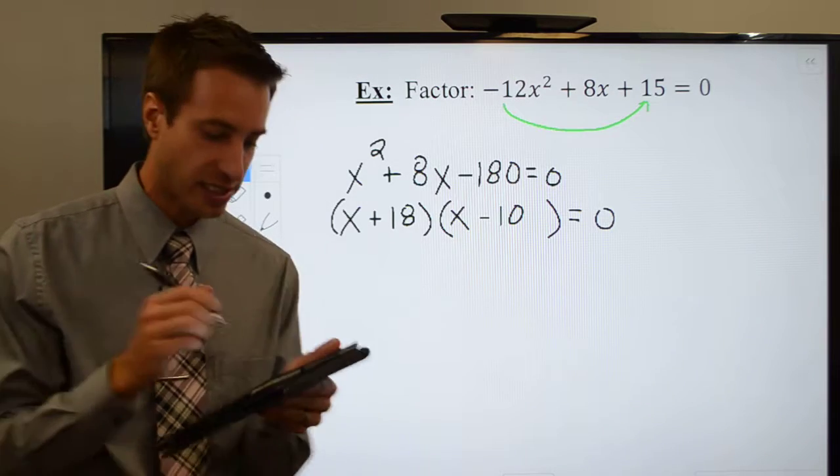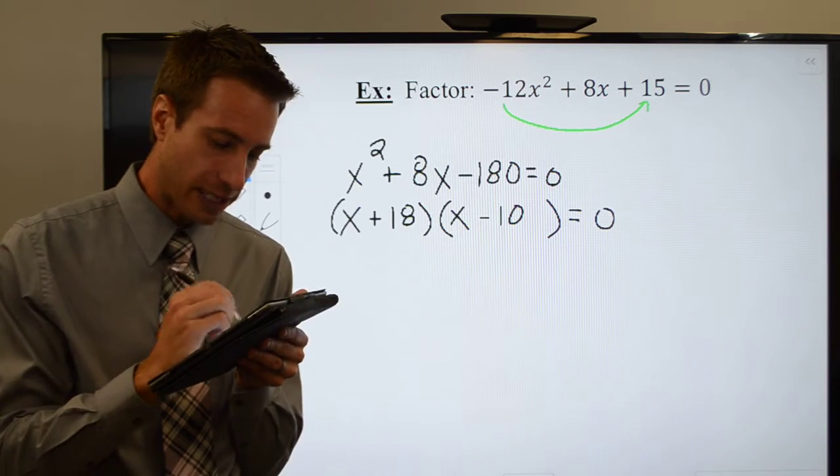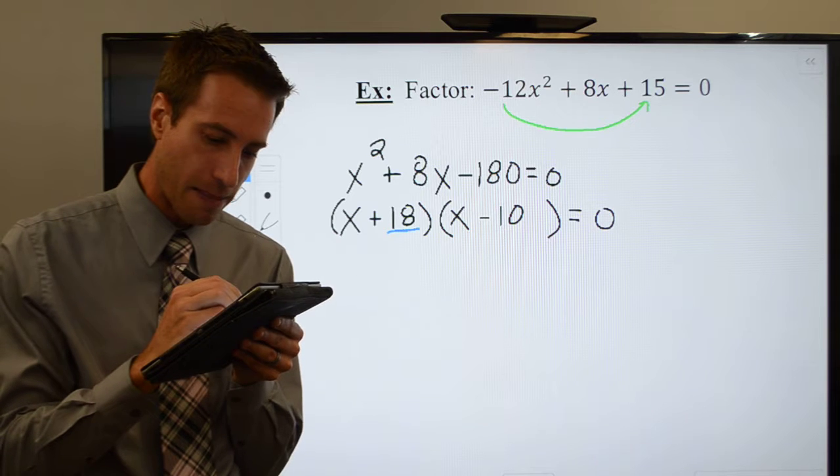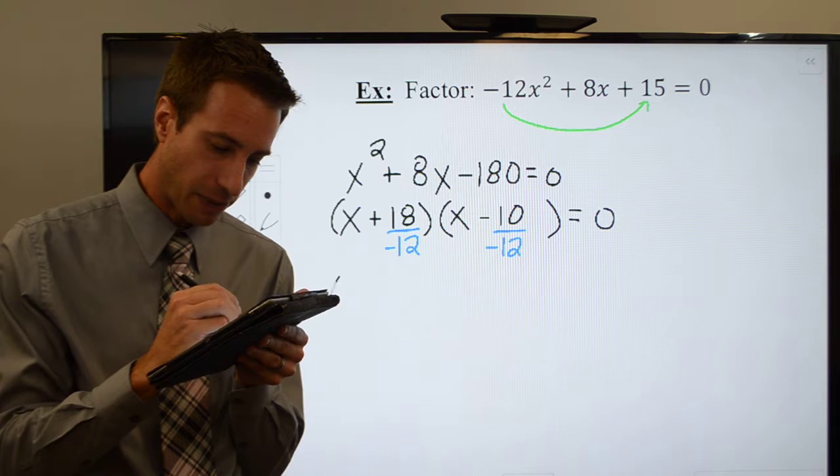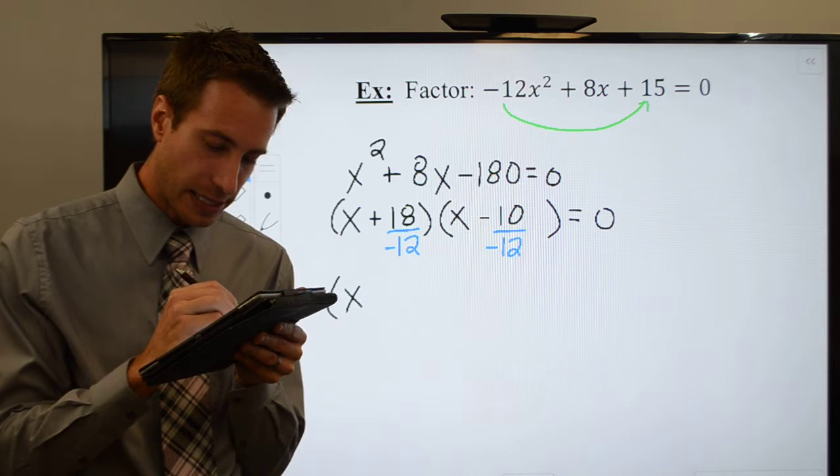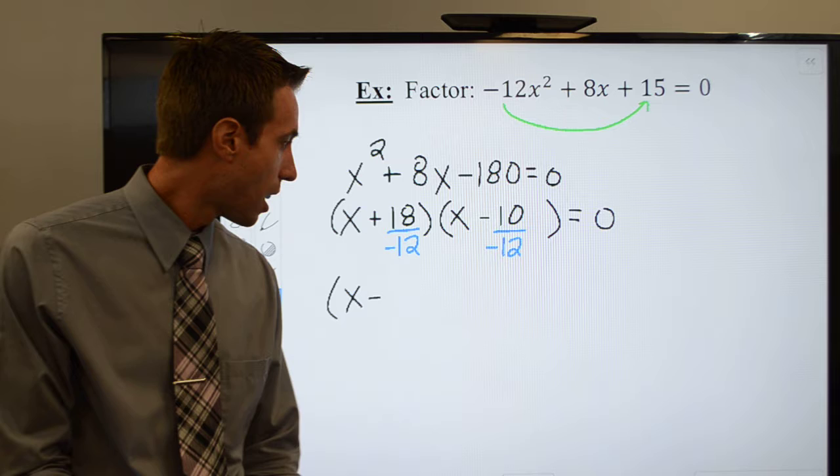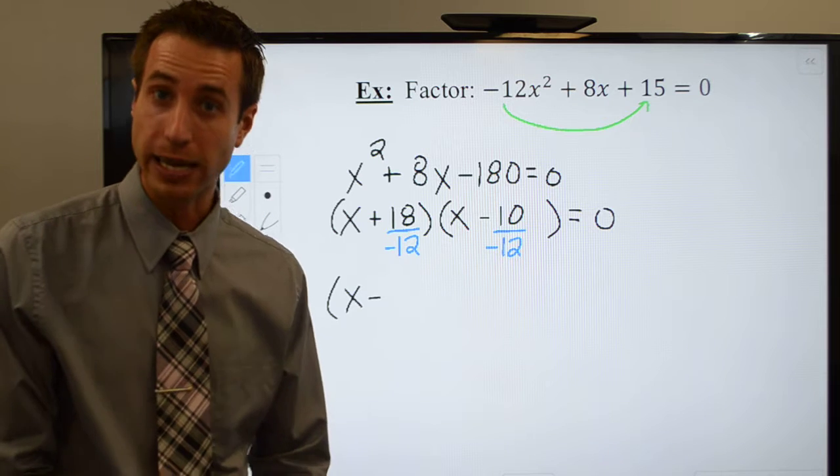That's good work. But, we're not done with the slide and divide method. I now need to divide those guys by my original leading coefficient. Simplify. Well, let's see here. 18 and 12. I believe I can take a 3 out of each of those, which will leave me with, well, actually, I can do more than that.